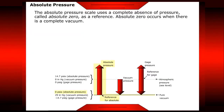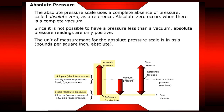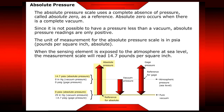Absolute pressure. The absolute pressure scale uses a complete absence of pressure, called absolute zero, as a reference. Absolute zero occurs when there is a complete vacuum. Since it is not possible to have a pressure less than a vacuum, absolute pressure readings are only positive. The unit of measurement is pounds per square inch absolute. When the sensing element is exposed to the atmosphere at sea level, the scale will read 14.7 pounds per square inch.